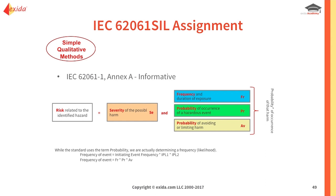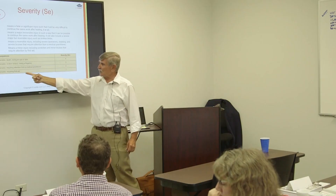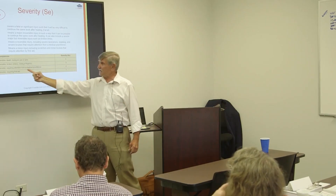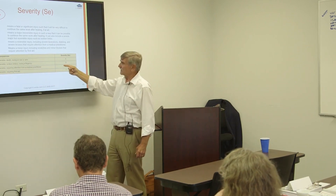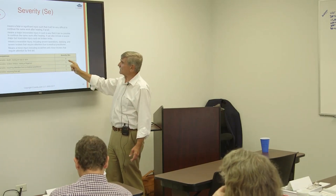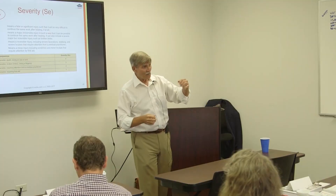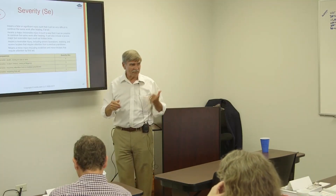For example, for severity there are four levels with examples. If it requires first aid, that's a one. If it requires attention from a medical practitioner, that's a two. If it's irreversible — like broken limbs or losing a finger — it's a three. Or irreversible like death or losing an eye or an arm — that's a four. You look at these and make a subjective judgment: what category is it in?